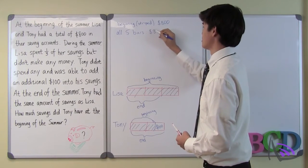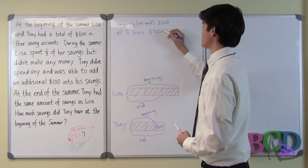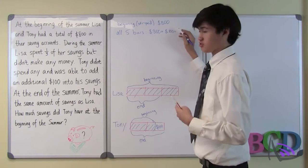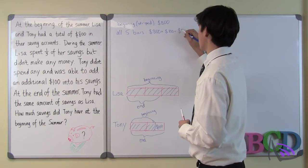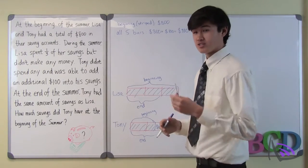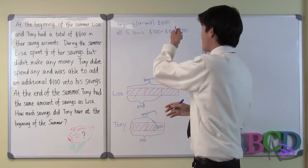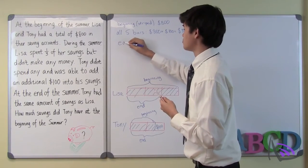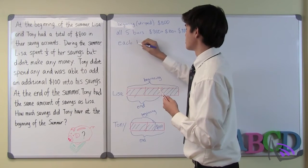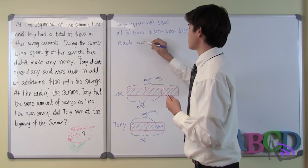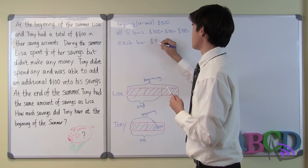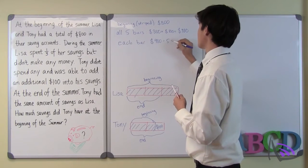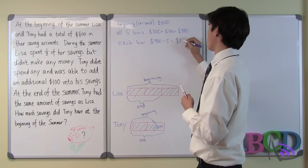That's $900. And now since each bar is equivalent, we can just divide 900 by 5 to find how much each bar represents. $900 divided by 5 is equal to $180.